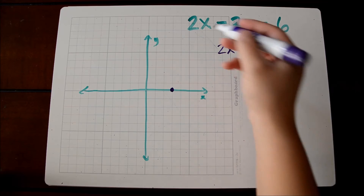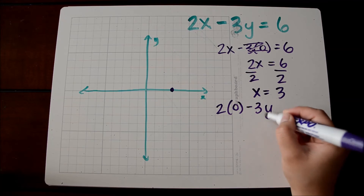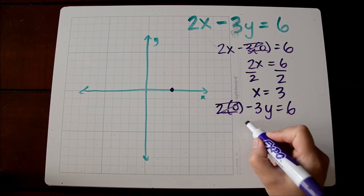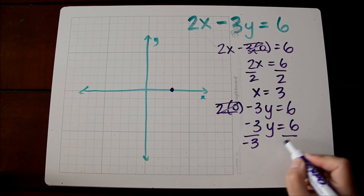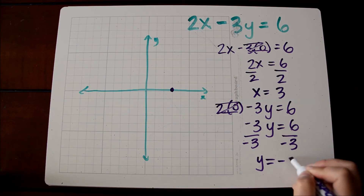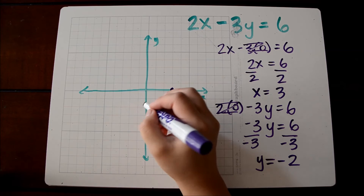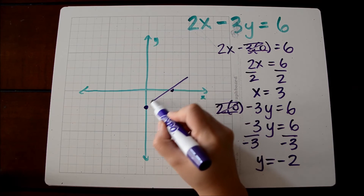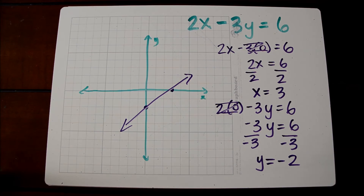Now to find our y-intercept, we substitute in 0 for x. Anything times 0 is 0, so this term is gone. We're left with negative 3y is equal to 6. When we divide both sides to solve for y, we get y is equal to negative 2. So we have our y-intercept at (0, -2). When we connect our two intercepts, this is the graph of our linear equation.